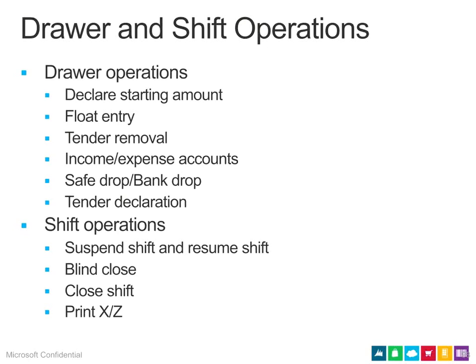Tender declaration happens at the end of the day. After all drawer activity — starting amounts, float entries, safe drops — you declare how much is in the drawer at the end of your shift. You're counting what's physically in the drawer, since money that's gone to the safe or bank has already been accounted for. That counted amount is your tender declaration.